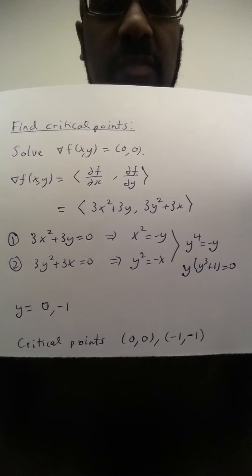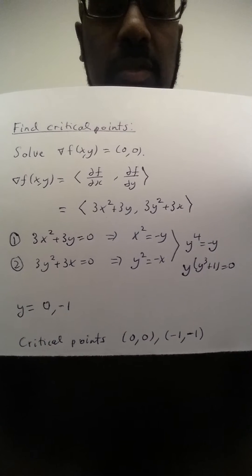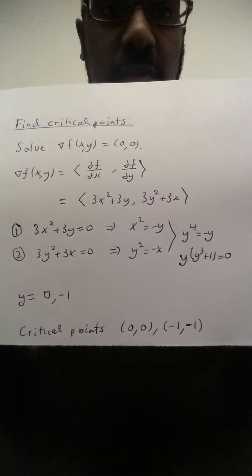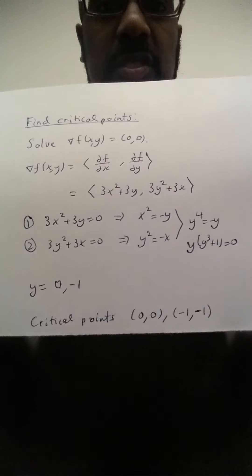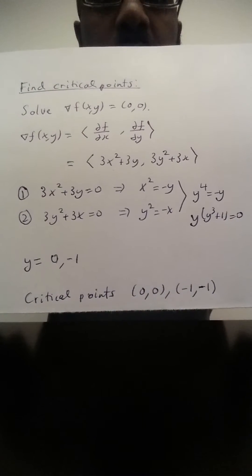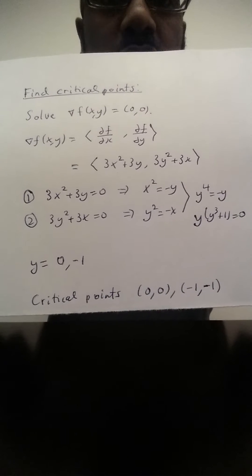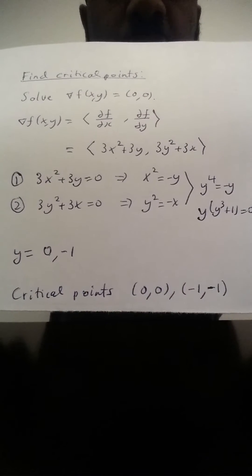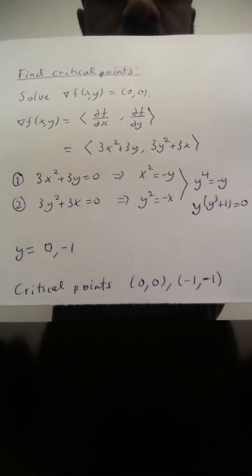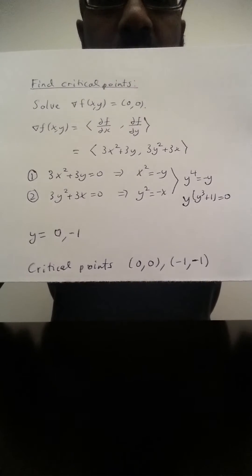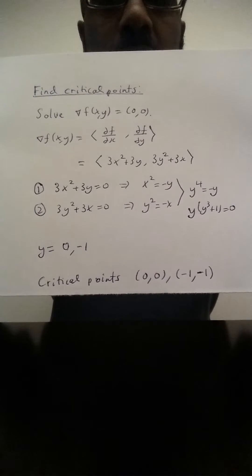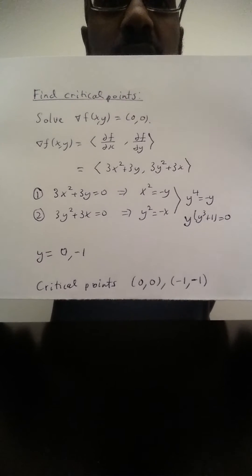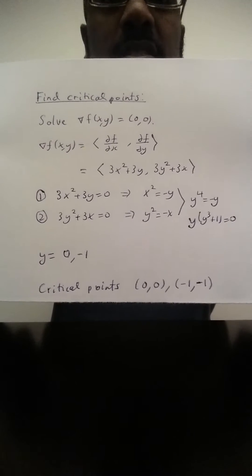Right, and if we simplify, substitute one of the equations into the other, we get y to the fourth is negative y. And so y has to be zero or negative one. And if we substitute that in to equation two, the y values, we figure out that the critical points are (0, 0) and (-1, -1). Okay, so I went through that rather quickly, you can take a look and try that on your own. But the key point here is that to find the critical points, like in single variable calculus, you need to set a derivative to zero. In a multivariable case is the gradient that gets set to zero.